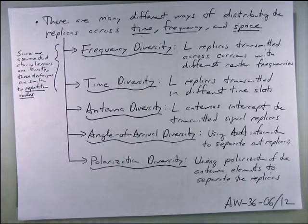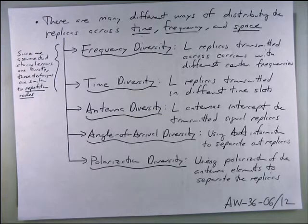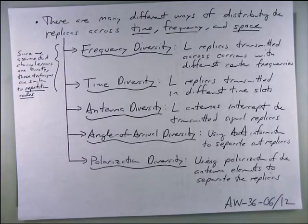Ways of being diverse include: frequency diversity — sending copies at F1, F2, F3, so frequency selective fading that destroys F1 leaves F2 and F3 intact; time diversity — repeating information multiple times so even if some copies are drowned out, the information can still be recovered; antenna diversity — using spatially separated antennas; angle of arrival diversity; and polarization diversity — sending information in two orthogonal polarizations so if one is corrupted, the other still carries the information.